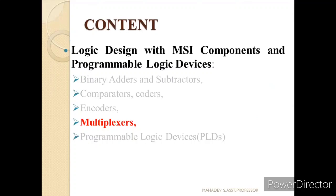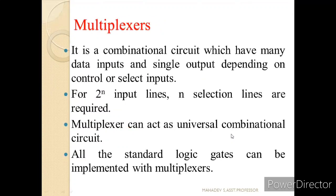Let us see the content we are going to study today. Today we will be concentrating on multiplexers. A multiplexer is a combinational circuit which has many data inputs and a single output depending upon the control or select line. We have 2 to the power of n input lines and n select lines and 1 output line. Multiplexers are helpful in implementing basic gates, so we can use them for universal combinational circuit applications.